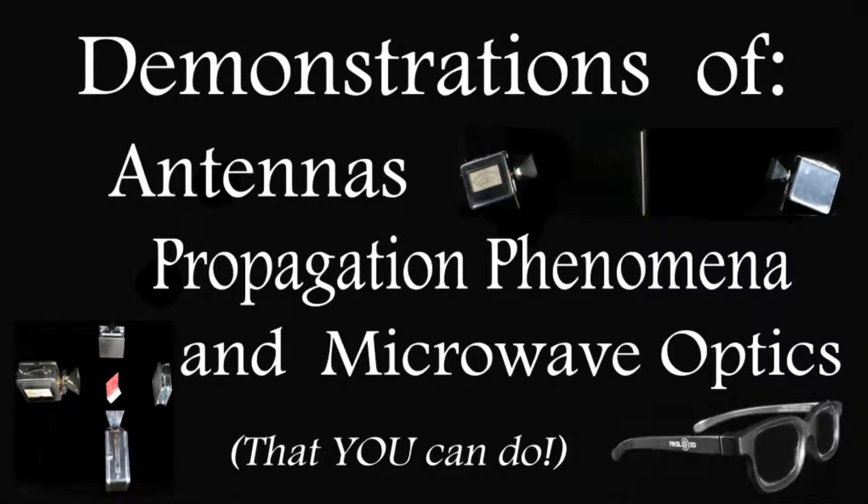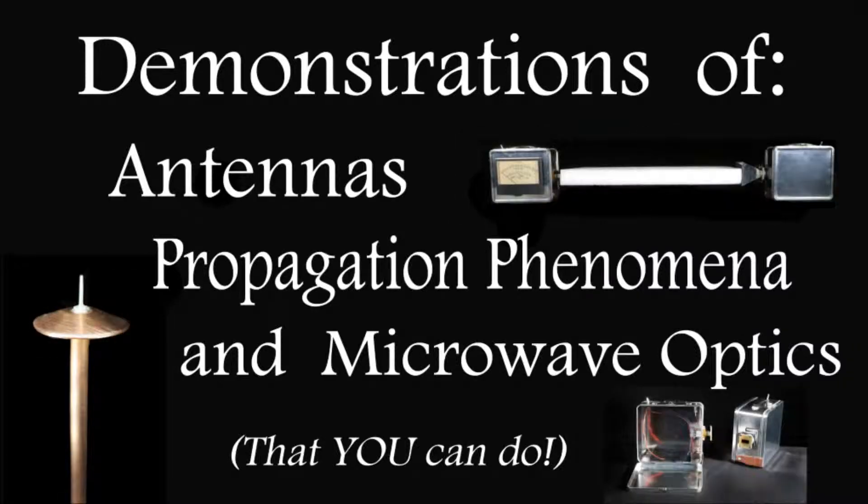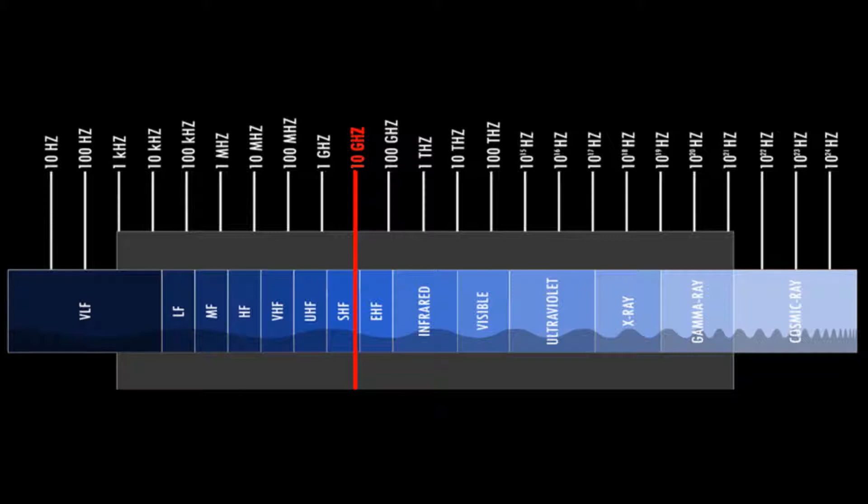All of the experiments can be performed on a six-foot folding table due to the fact that we will be using microwave frequencies. For some demonstrations an optical analog will be demonstrated or discussed. The radio frequency used for these demonstrations will be 10 gigahertz, the wavelength being about three centimeters or about an inch and an eighth. This is in the microwave spectrum.